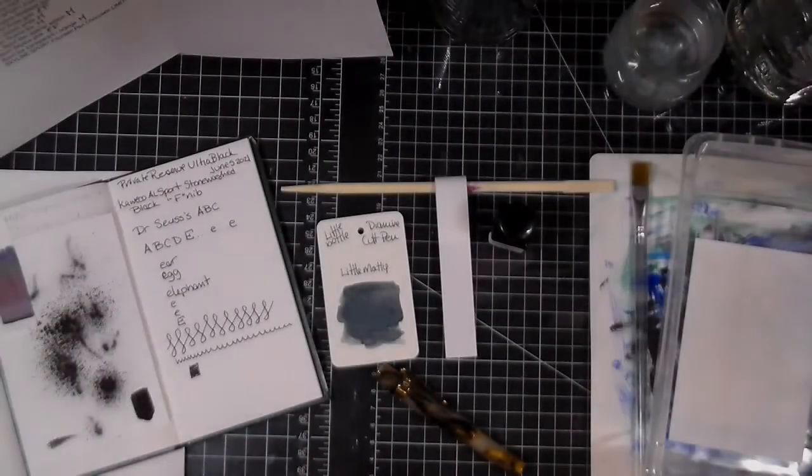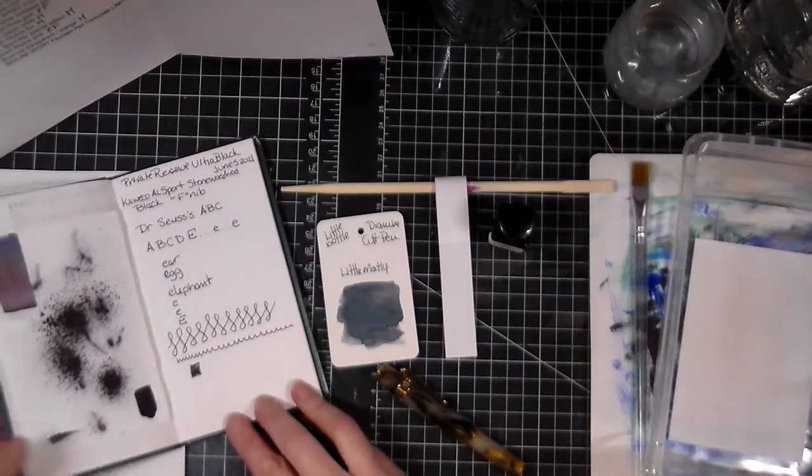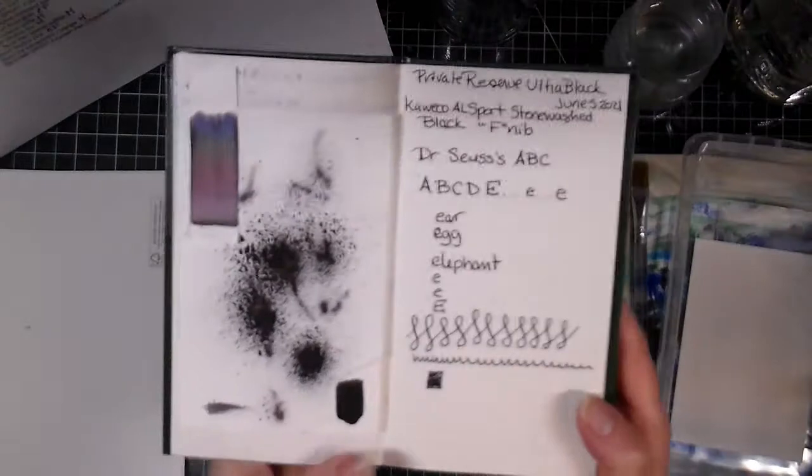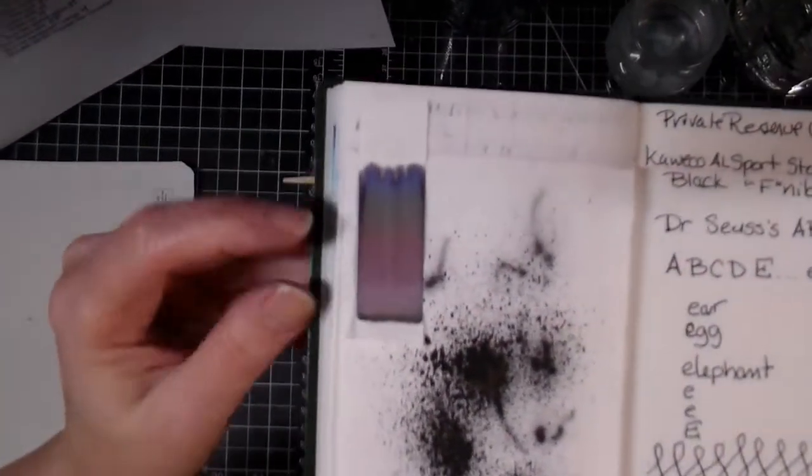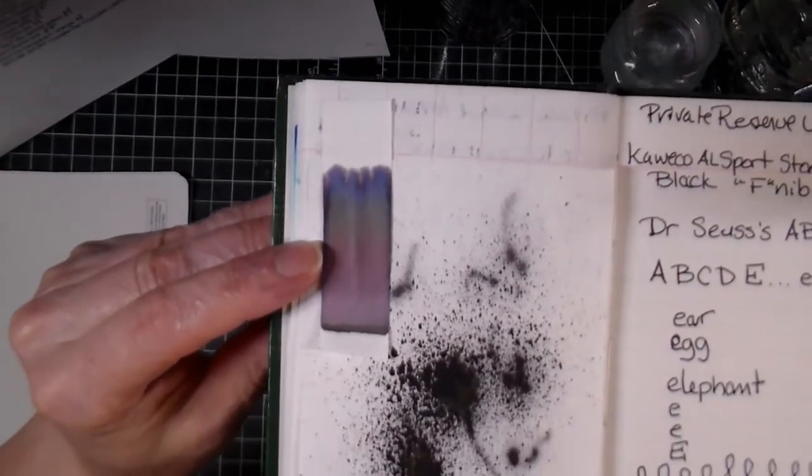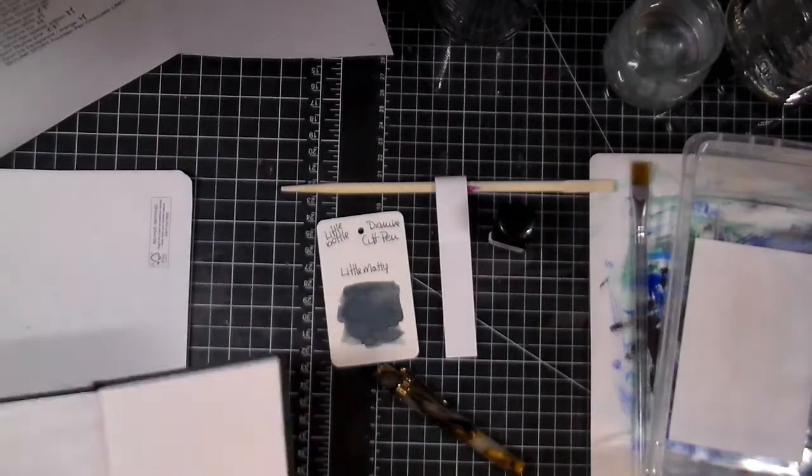Hi everyone, Crafting Vicky here with you for day number six of the 30 inks 30 days. Yesterday was this beautiful ultra black which had an amazing chromatography, love love love that.